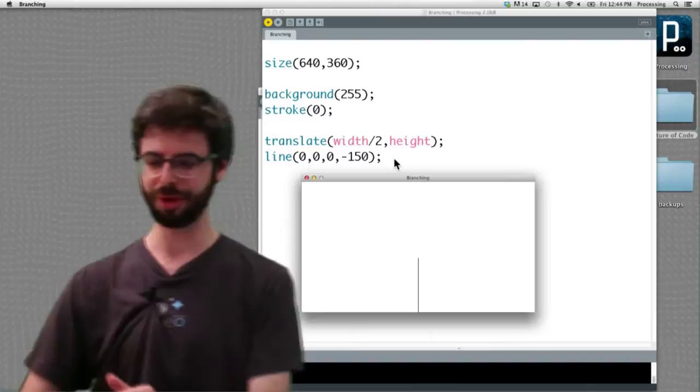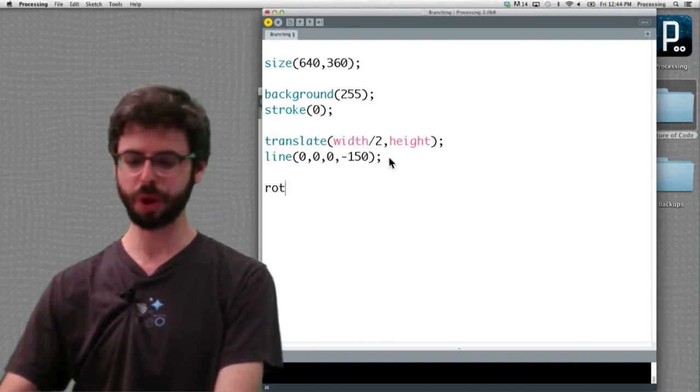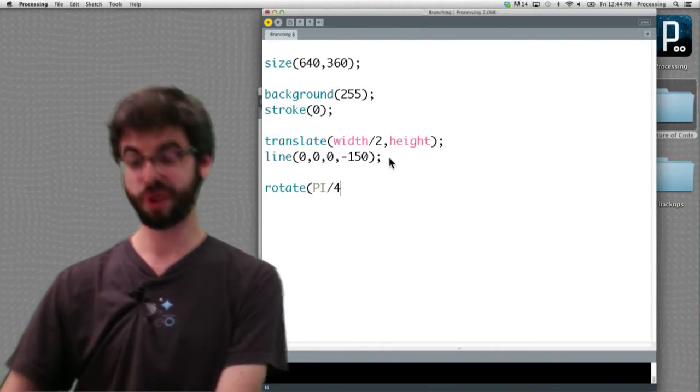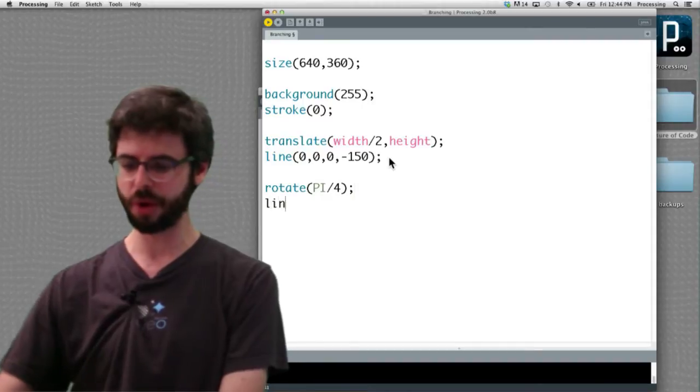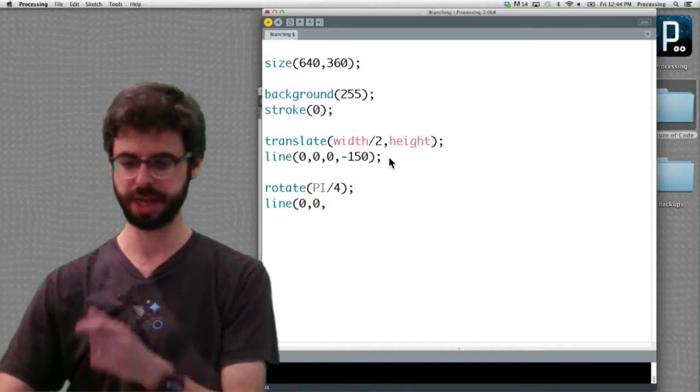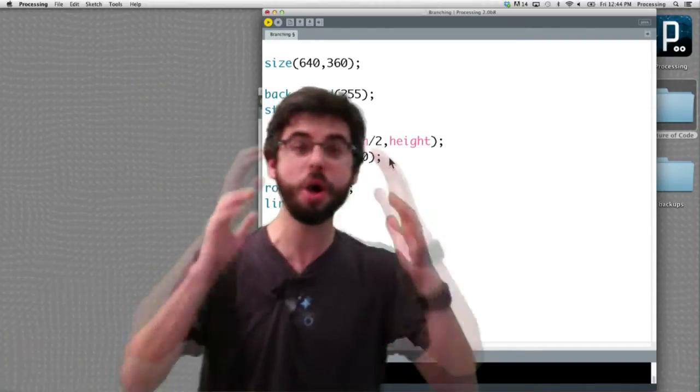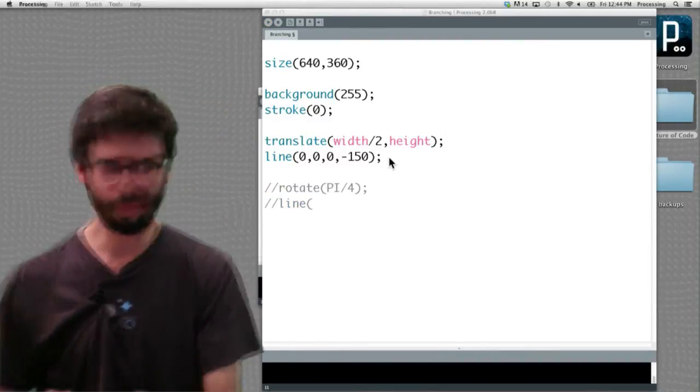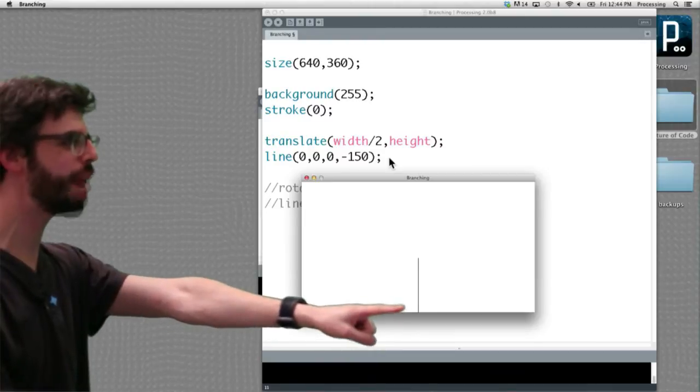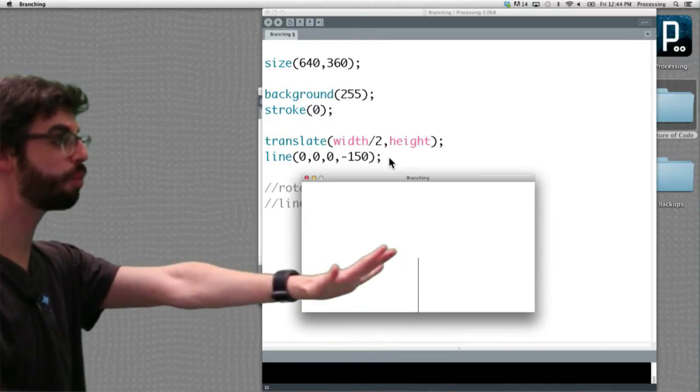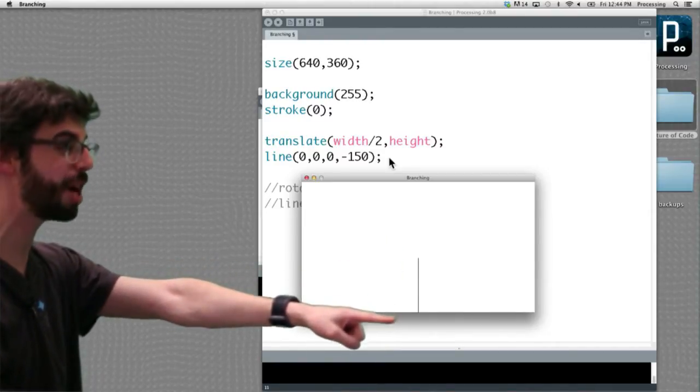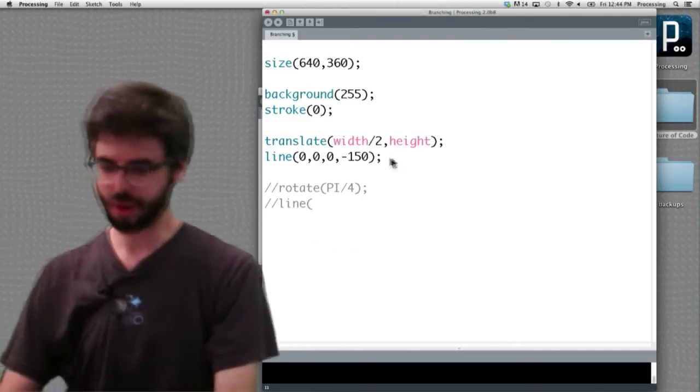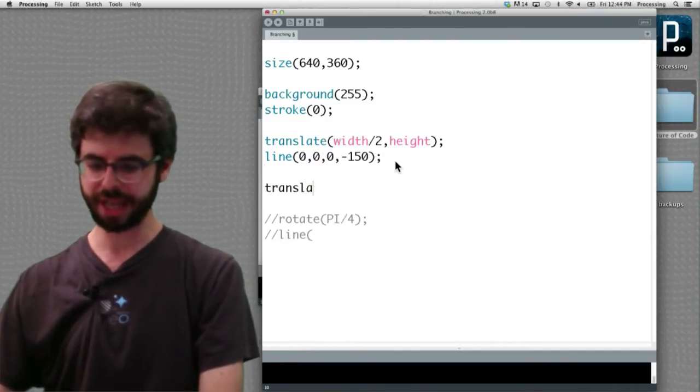Now what do I want to do? What did we say? I want to rotate by 45 degrees, pi divided by 4, and let's draw another line. From where though? Oh wait! What do we need to do? We went from here. We drew a line from the bottom to there. Now I want to rotate and draw another line. I need to, after I'm done, translate up to there.